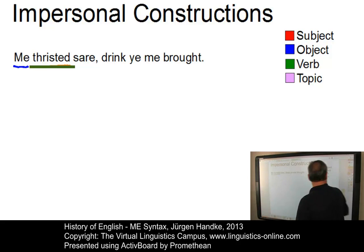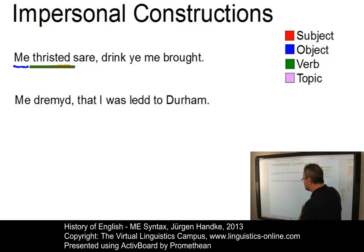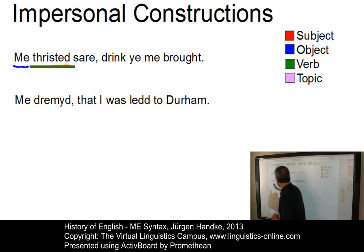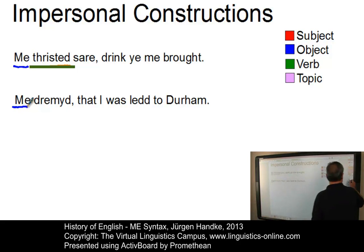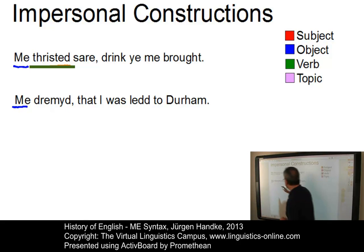Let's look at another example: 'Me dremit that he was led to Durham.' Again looking at the first clause, we have a similar case: 'me' is an object, and 'dremit' is the verb.